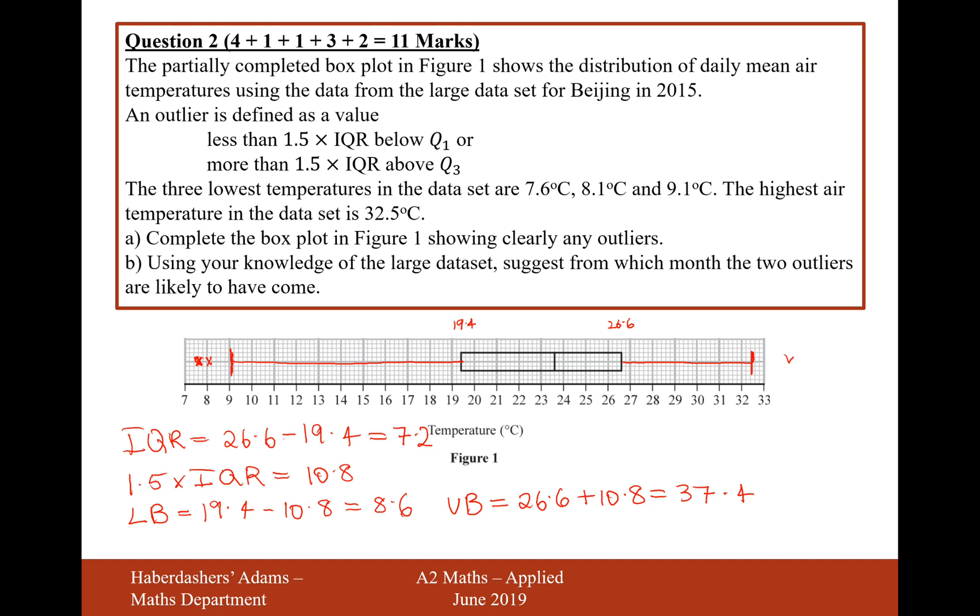So there we are, that's the answer for question A. Moving on to part B. Use your knowledge of the large data set to suggest which month the two outliers are likely to have come.